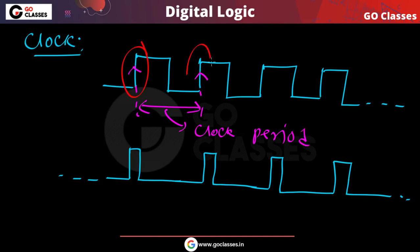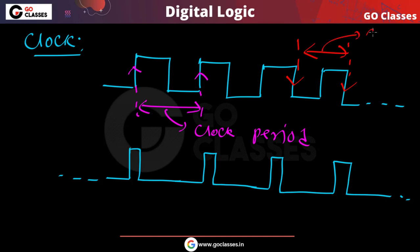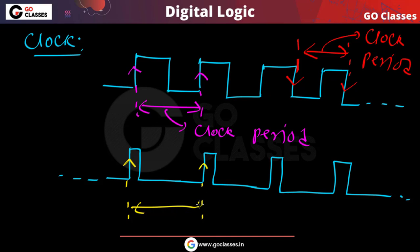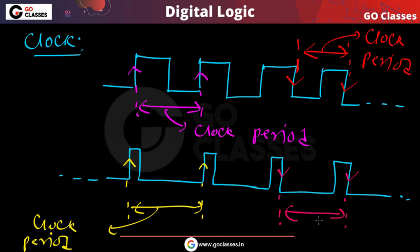Clock period means the duration between two consecutive rising edges, or the duration between two consecutive falling edges. For example, this is a falling edge and this is a falling edge — that duration is also the clock period. So the clock period is the duration between two consecutive rising edges or two consecutive falling edges. This is called the clock period.